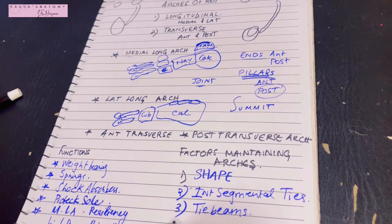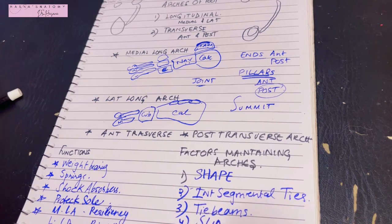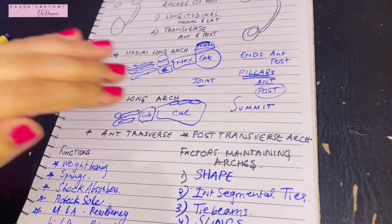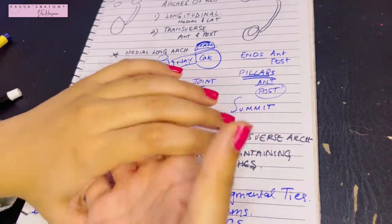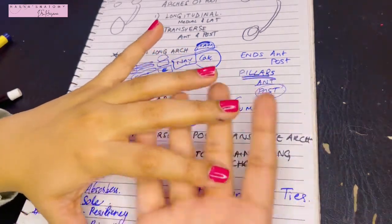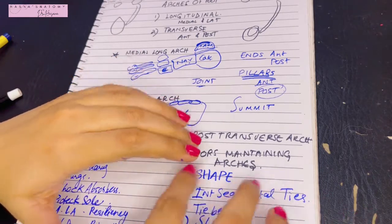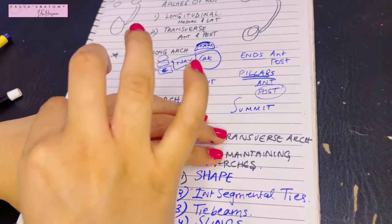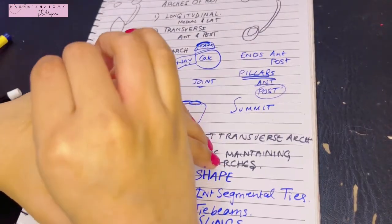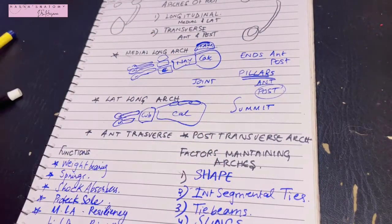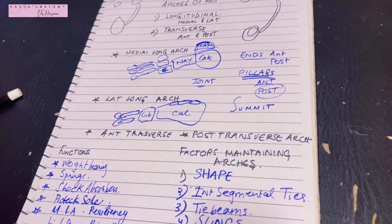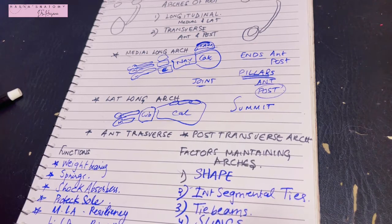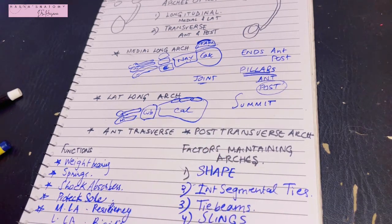Once the intersegmental ties are formed and the anterior and posterior ends are linked, we need to form the highest summit point of the arch. The fourth factor is slings — structures responsible for pulling the arch upward to form a summit. The fifth factor is suspension. These are the five steps in forming your arch.